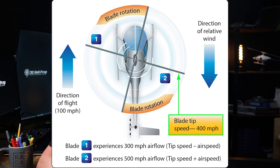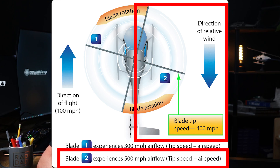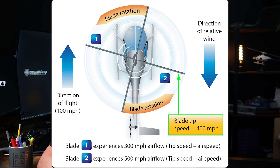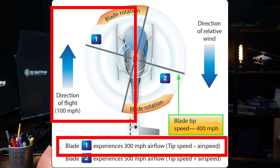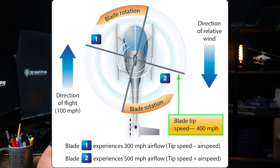Dissymmetry of lift occurs because the rotor blades on one side of the helicopter — the advancing side — move into the airflow, while blades on the opposite side, the retreating side, move away from the airflow. As a result, the advancing blade generates more lift than the retreating blade, which, if uncorrected, would cause the helicopter to roll.